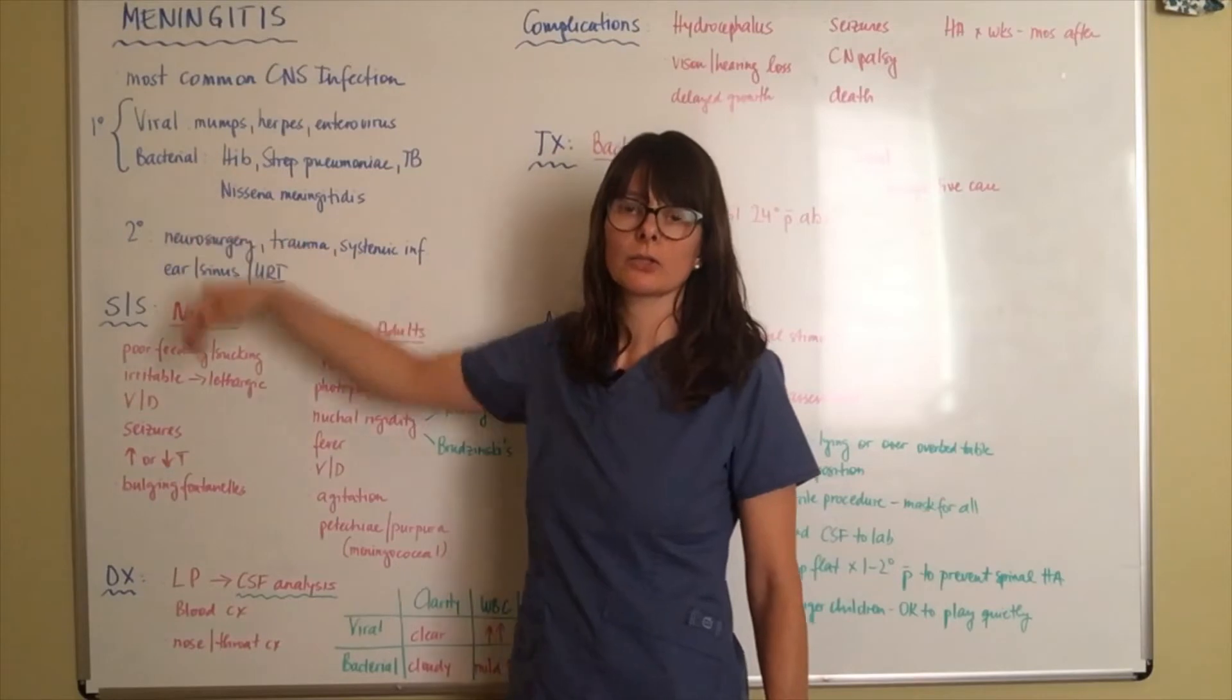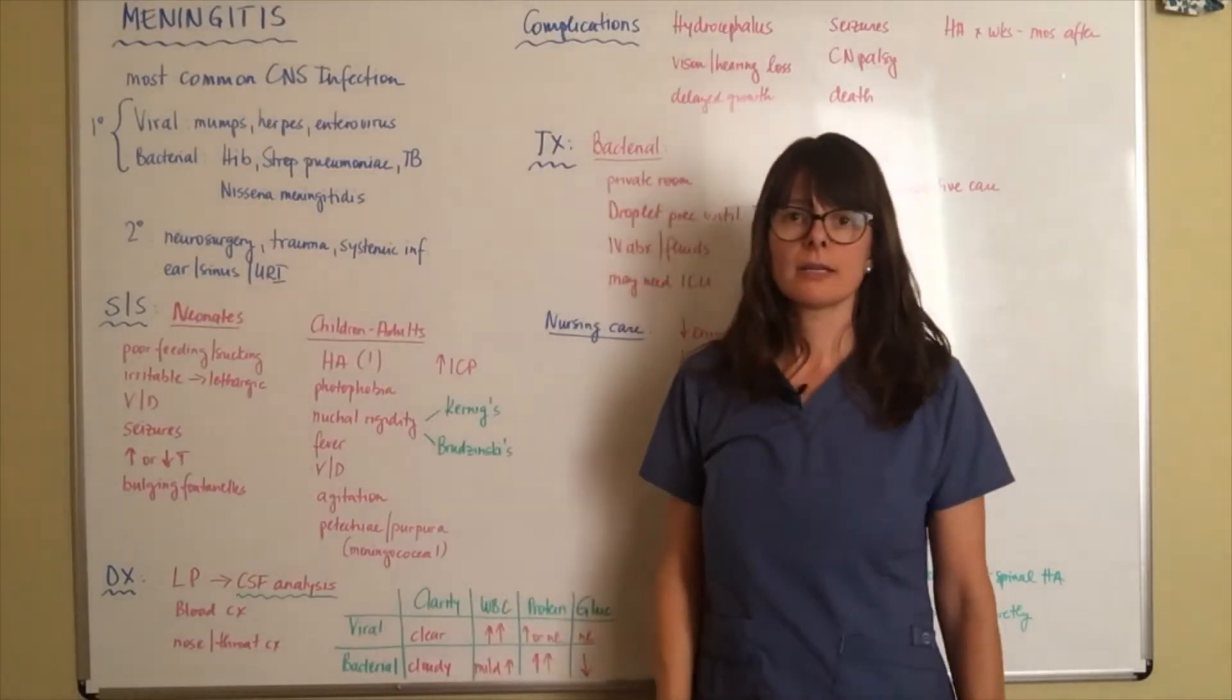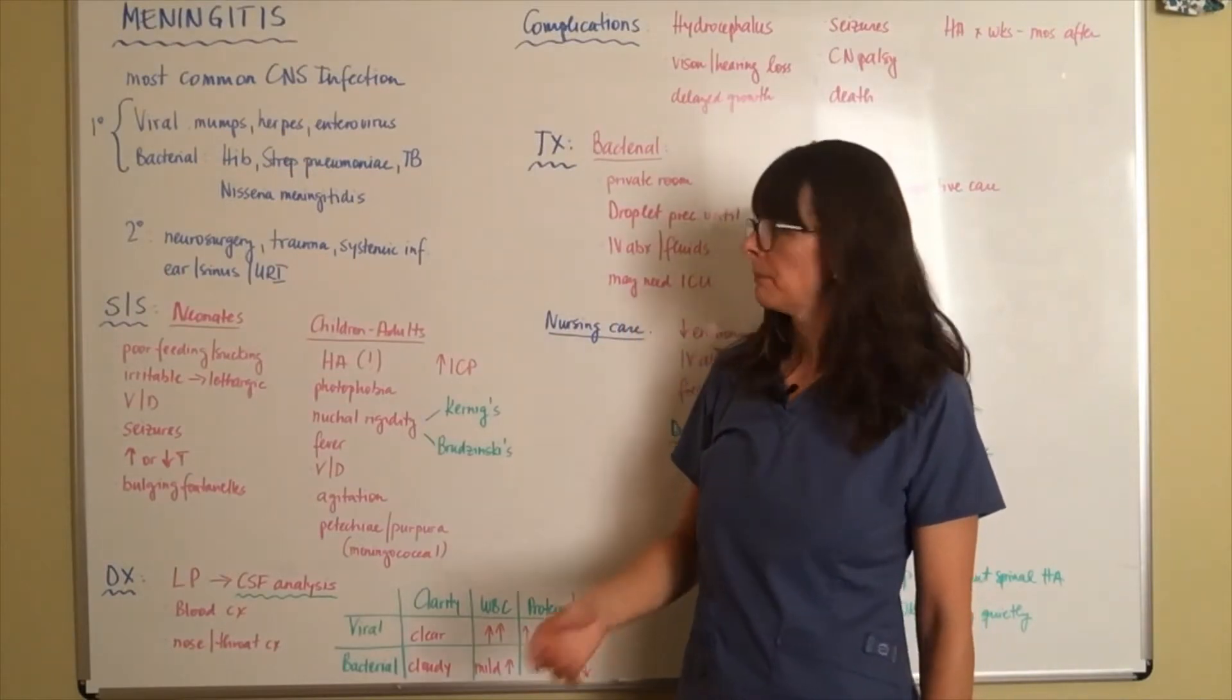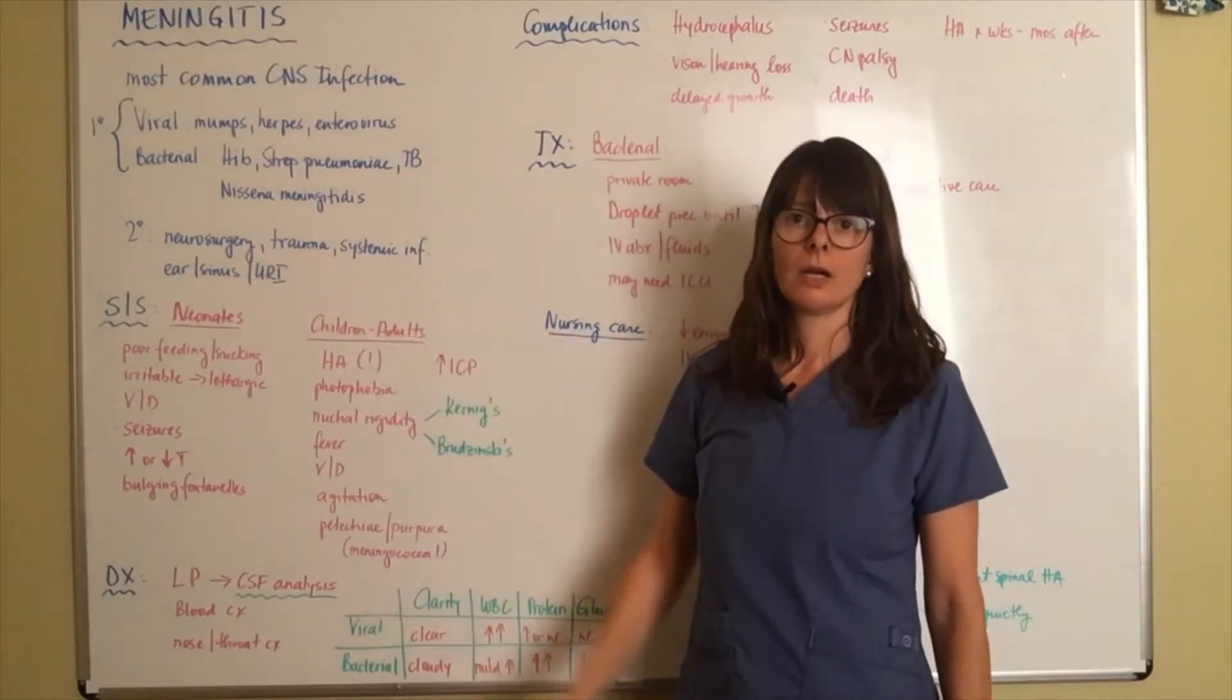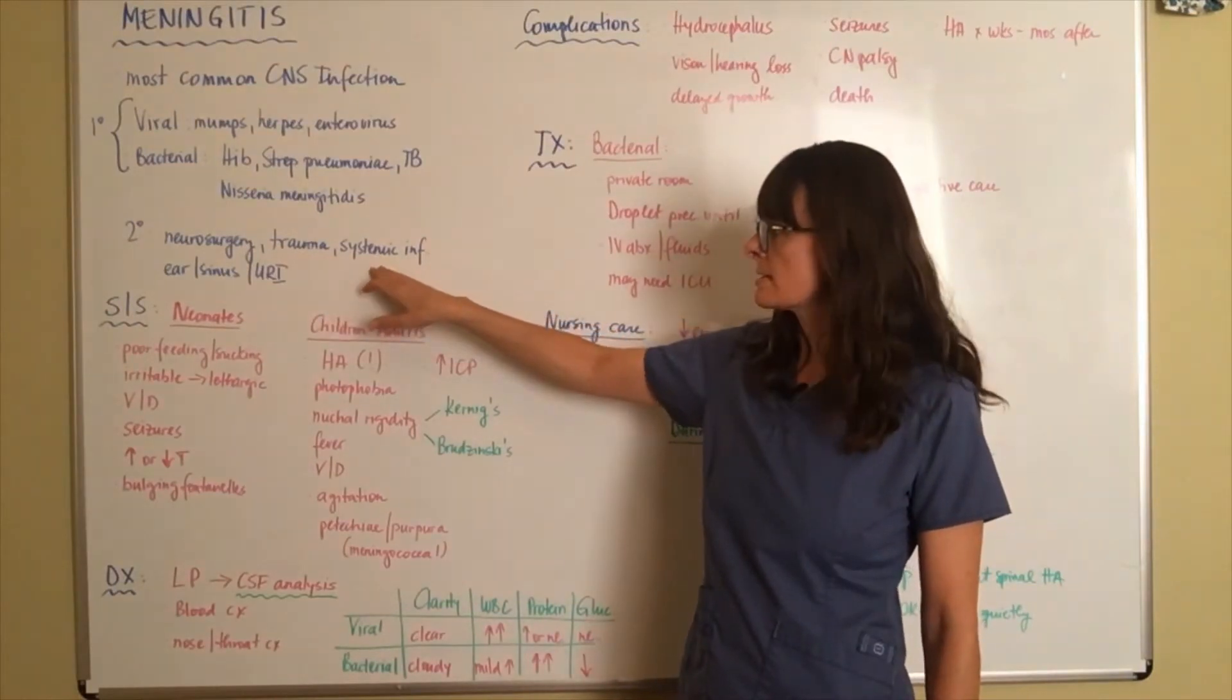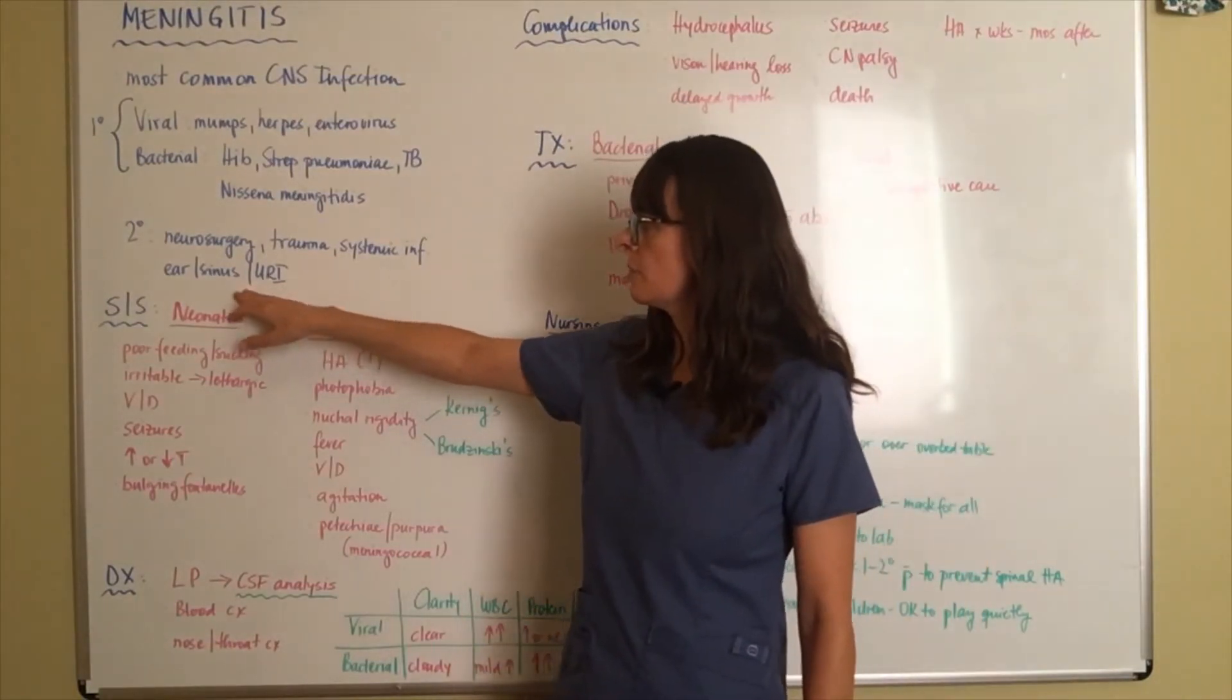Secondary causes of meningitis basically have to do with somehow an intrusion to the central nervous system. That could be due to neurosurgery, somebody who might have a tumor or an aneurysm that needs repair, some sort of head trauma, systemic infections can travel and affect the meninges.